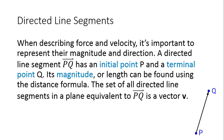The magnitude of that directed line segment, or its length, can be found using the distance formula, especially when you have two points — the initial point and the terminal point. The set of all directed line segments in a plane that are equivalent to PQ is called vector V. They have the same direction and the same magnitude, so they're equivalent.